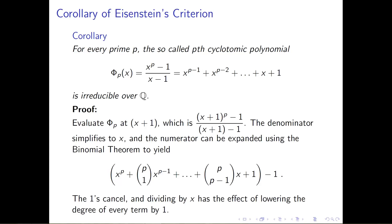That's why the proof of this is so cool — it comes up with a way to very cleverly use Eisenstein's criterion to figure out that this polynomial is irreducible. I'm going to give the trick away in the first line: the trick is to take phi sub p, the p-th cyclotomic polynomial, and not evaluate it at x. The trick is to evaluate the polynomial at x plus 1 — to evaluate it at some sort of horizontal shift of the function.